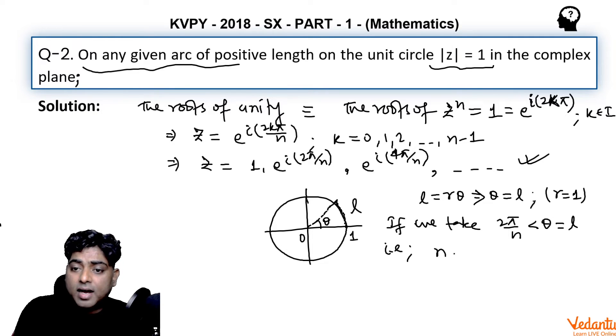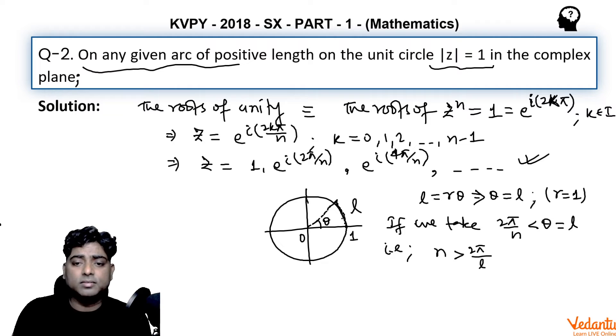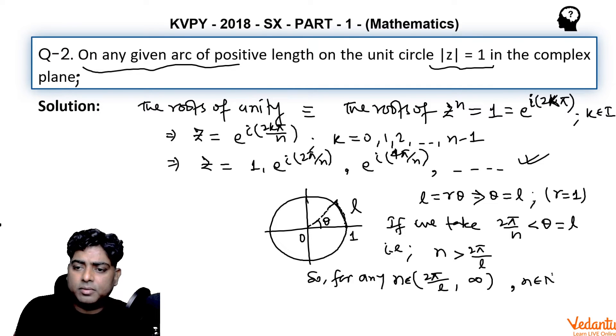Now if we take 2 pi by n to be smaller than this angle theta—this angle 2 pi by n is smaller than this angle which this arc length subtends at origin, and theta is basically l here—that is, I want to say if you choose n as something greater than 2 pi by l, l is given, so n is anything greater than 2 pi by l.